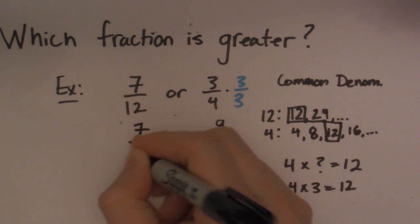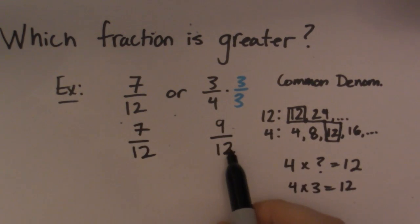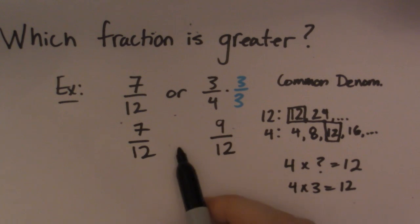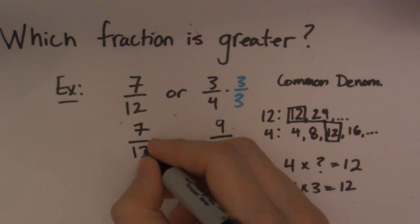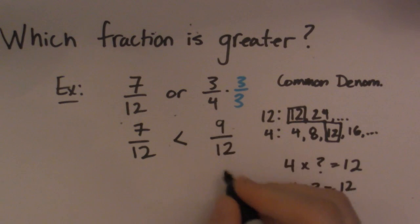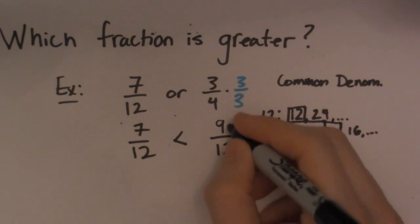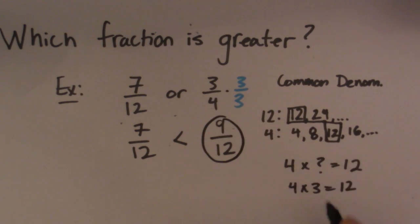So I rewrite them with the common denominator and see that my biggest number here is on top. So therefore that means that 7 over 12 is less than 9 over 12. So the fraction with the biggest number on top is always going to be your greater fraction. So therefore 9 over 12 is my biggest number.